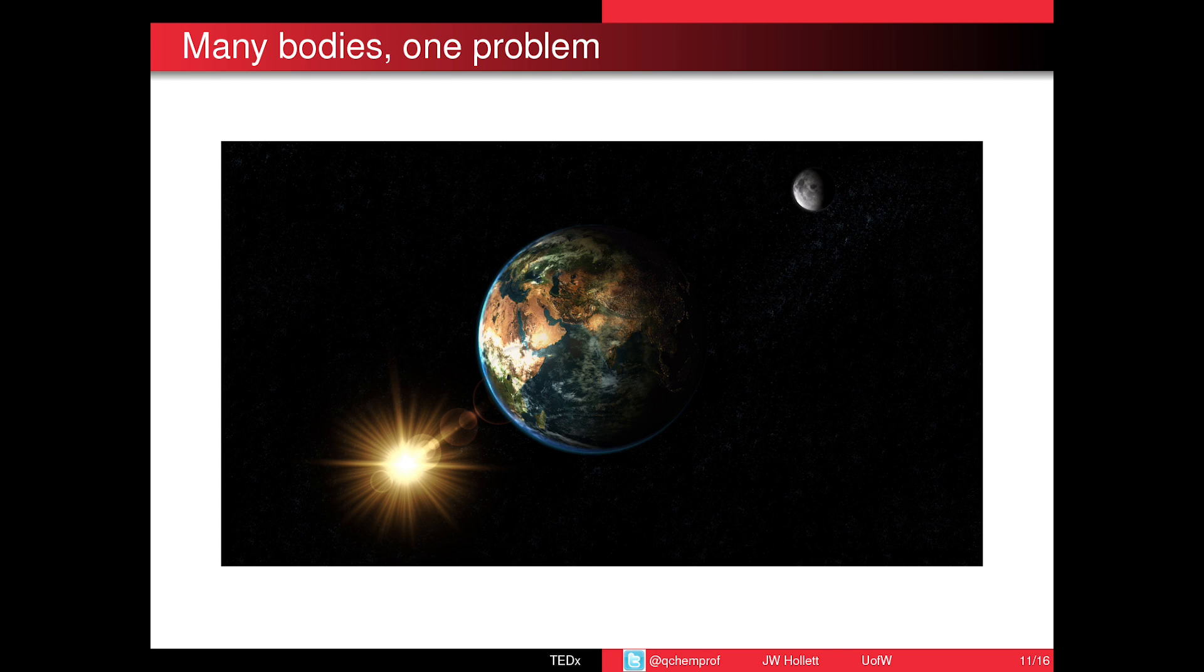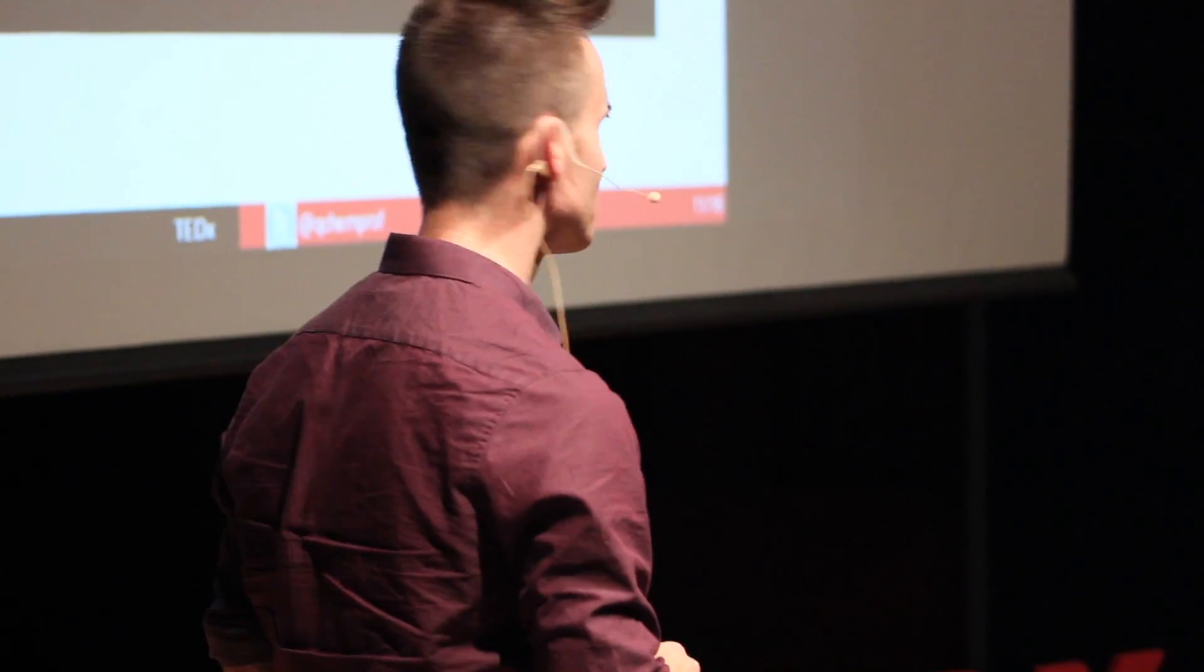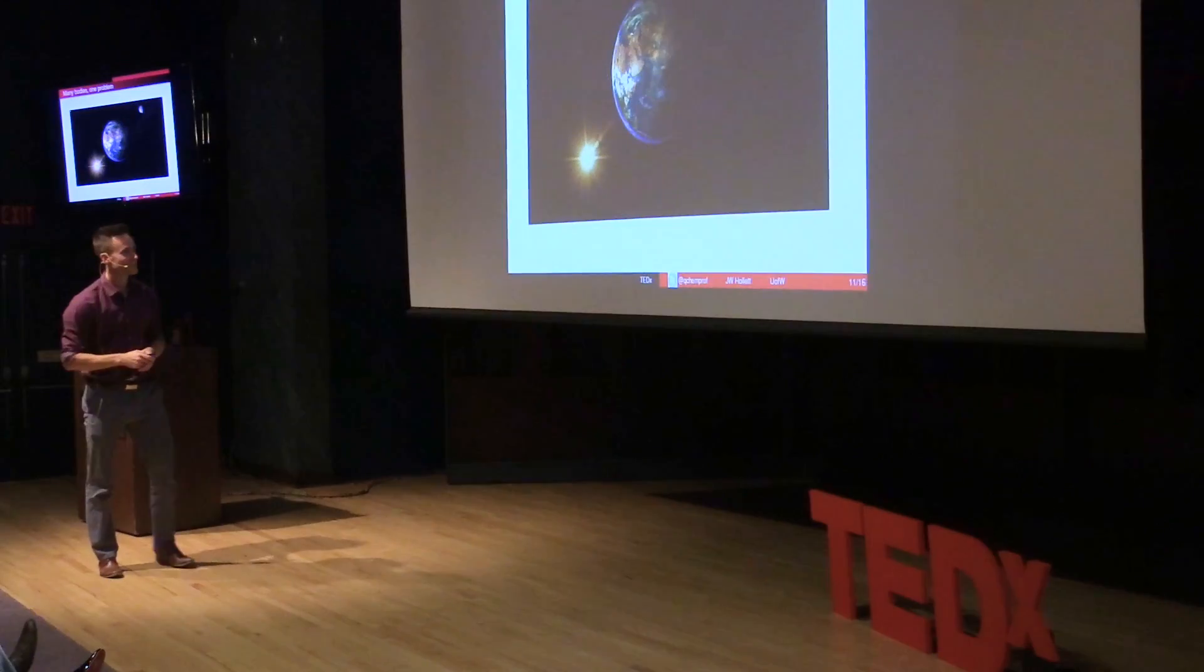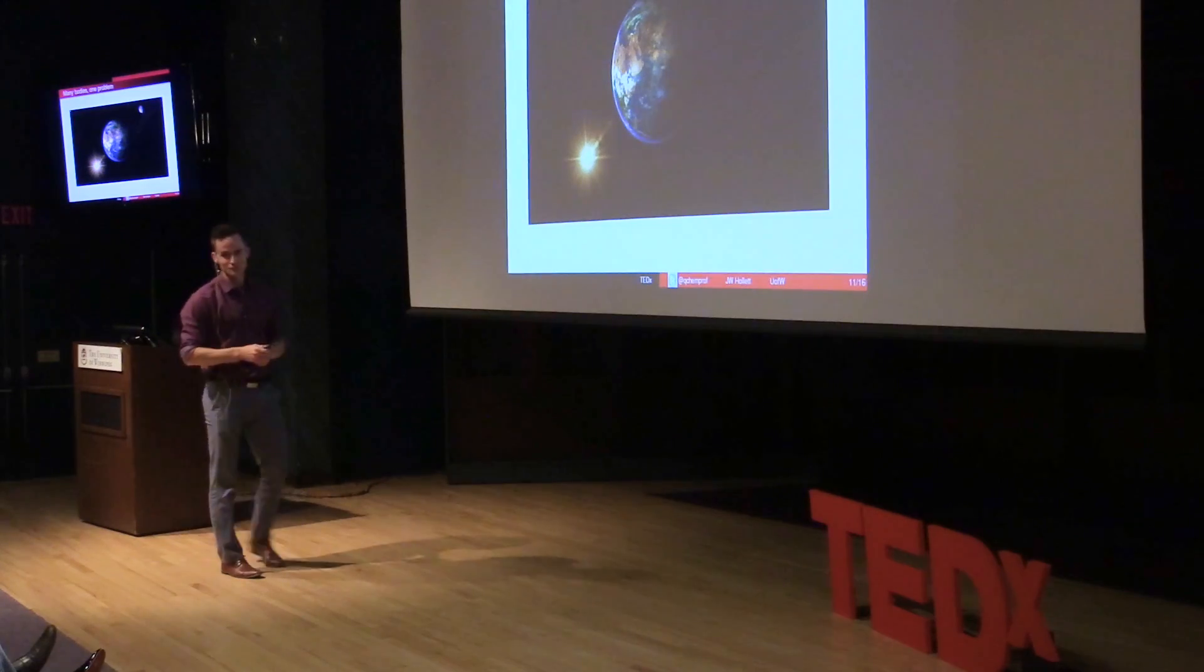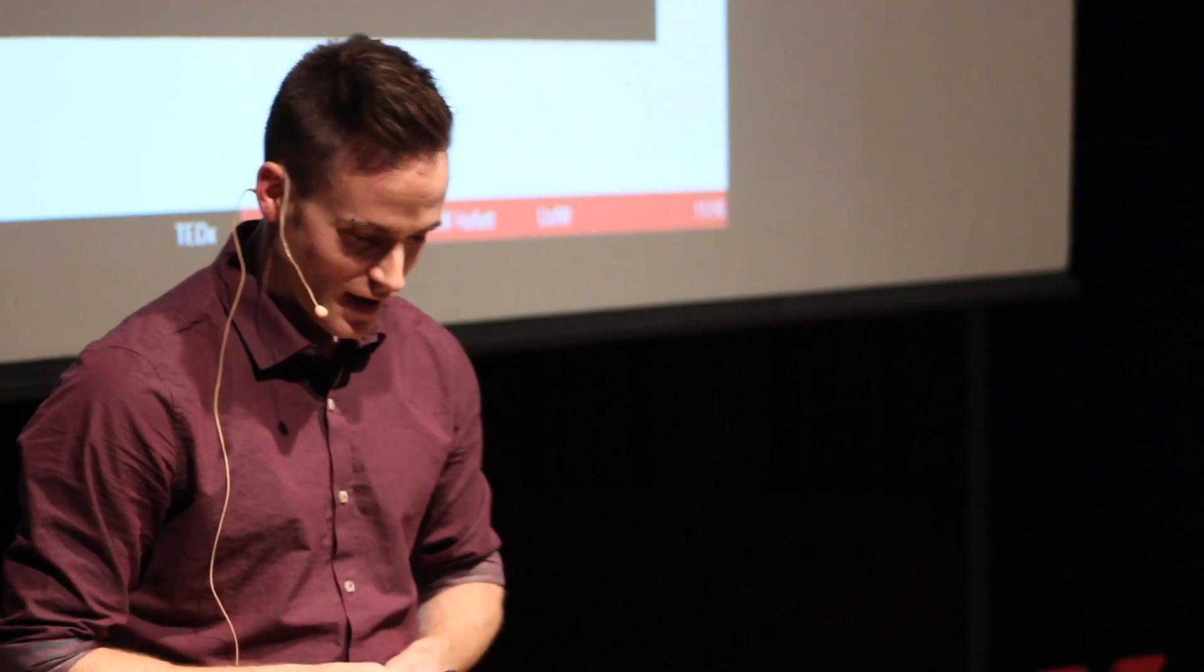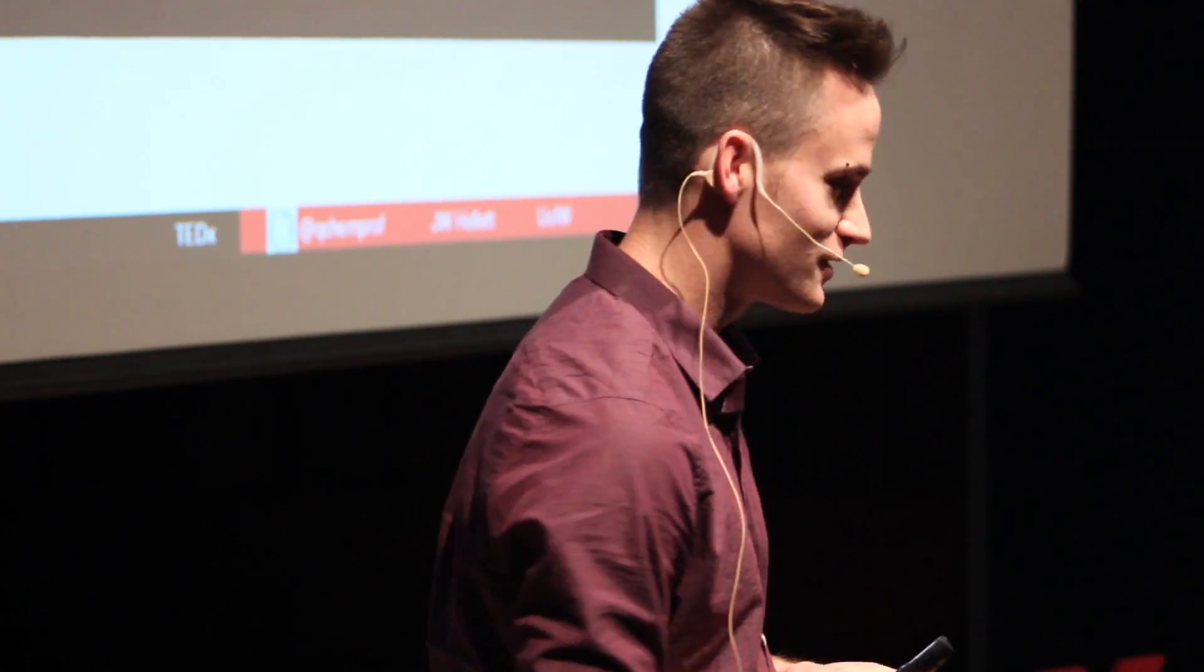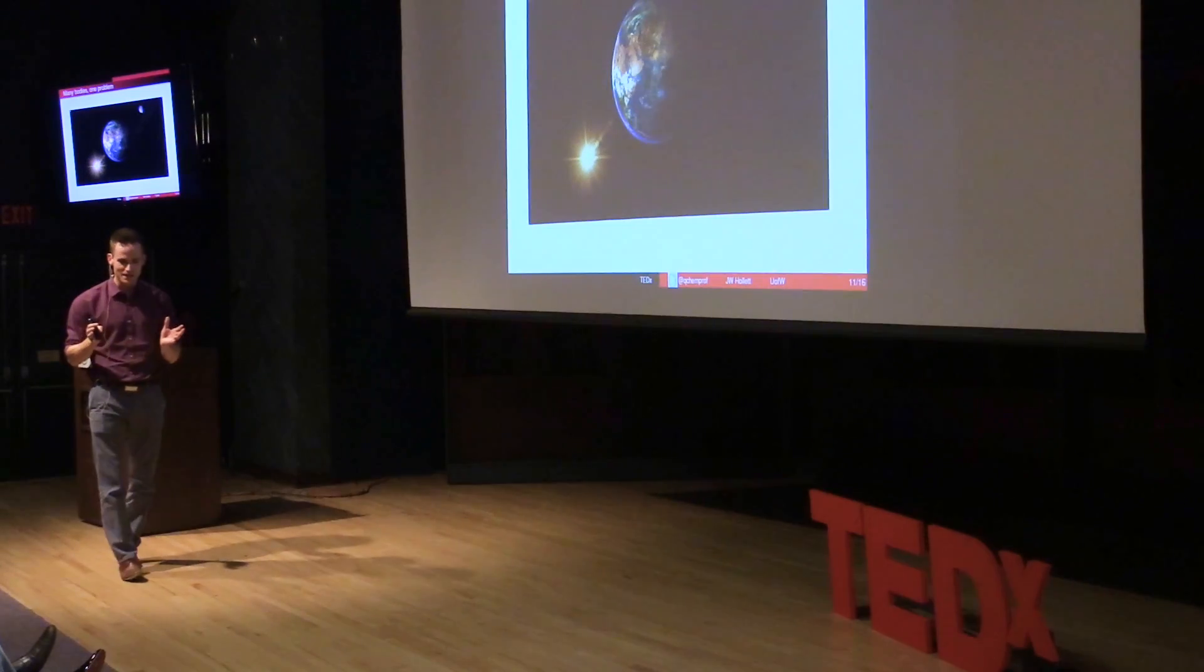And so it turns out that if I have three interacting bodies, for example, the Earth, Sun, and the Moon, and Newton told us that they interact due to gravity, because there's three bodies I can never actually write down exactly what they're going to do.